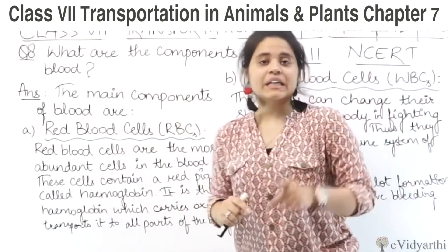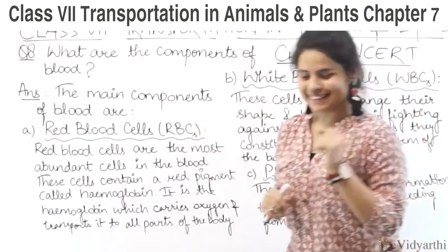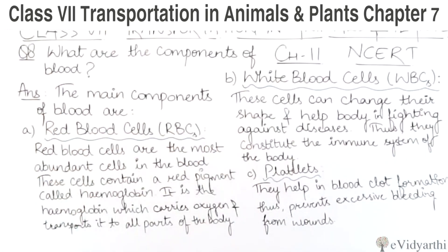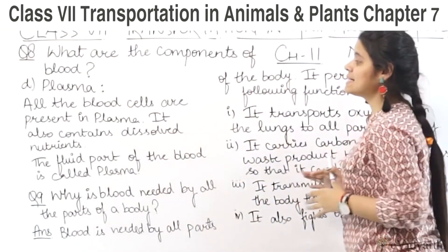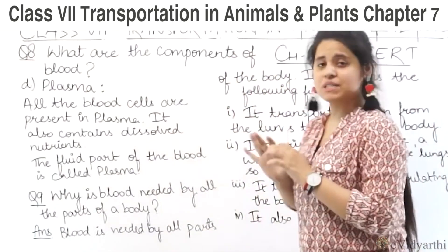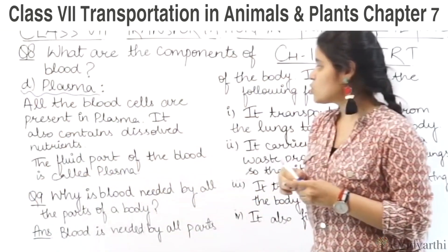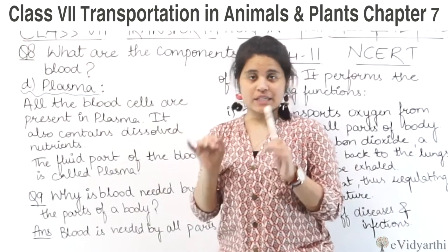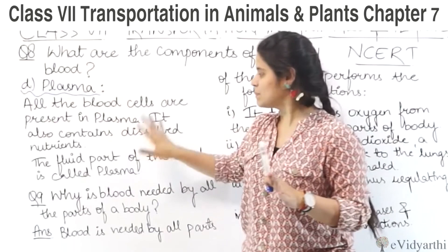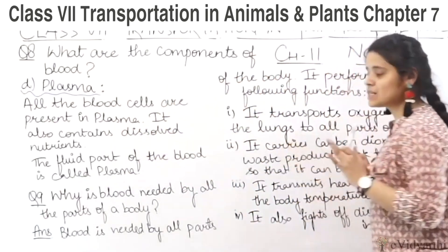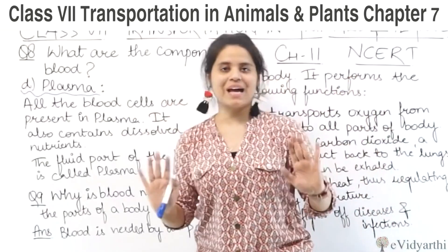Ab in 3 components ke alawa ek aur component hai — that is plasma. All the blood cells are present in plasma. So itne bhi hamare blood cells hote hain, saare plasma mein present hote hain. It also contains dissolved nutrients. The fluid part of the blood is called plasma — jo hamare body ka fluid part hai, usko hum plasma kehte hain.